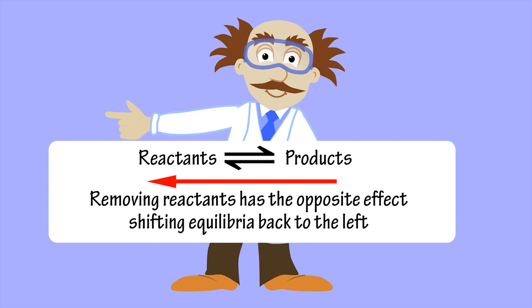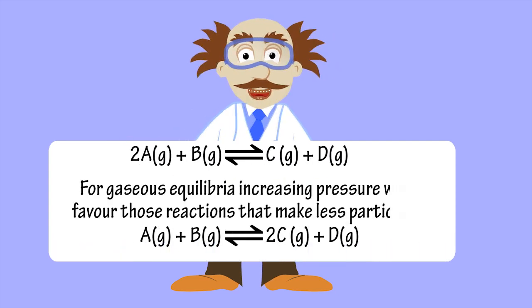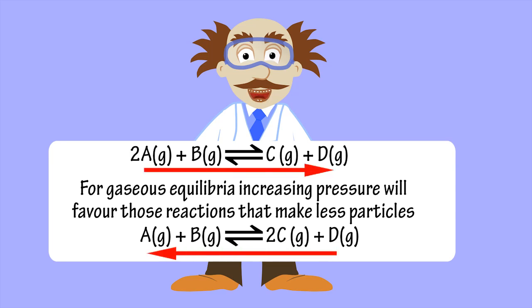Shifting equilibria back to the left. For gaseous equilibria, increasing pressure will favour those reactions that make less particles.